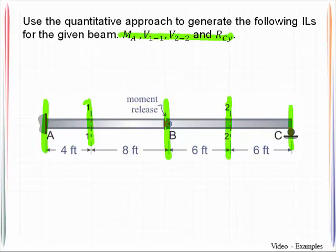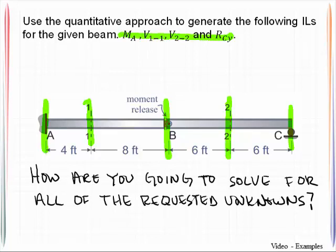You have a very important question that you need to be able to answer, and that question is this: How are you going to solve for all of the requested unknowns? So there are four of them. You need to get that straight in your mind at the very beginning of this process, so that no matter where the load is being placed, you know what approach you are going to take. So let me describe this to you.